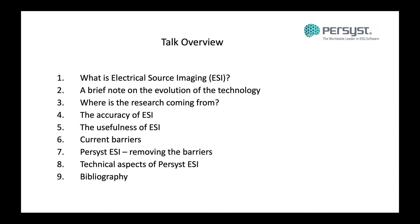Here's a brief overview of what the talk will include. We'll start off with a definition of what is electrical source imaging. We'll touch briefly on the evolution of the technology and talk about where the research is coming from. We'll talk about what that research is indicating, including that ESI is both accurate and useful, and we'll talk about the current barriers that still exist in terms of the routine implementation of ESI. We'll talk about the Persist contribution and our attempts to address some of those barriers, and we'll talk about some of the technical aspects of Persist ESI. Finally, the last three slides are a bibliography listing all of the papers that went into this talk.